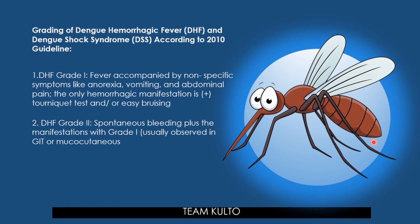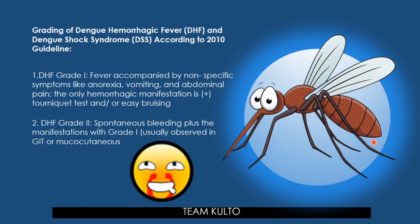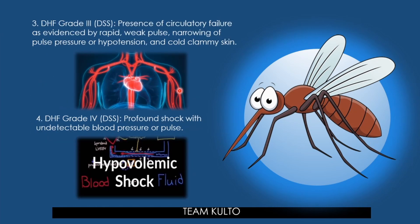Grade 2: spontaneous bleeding plus Grade 1 manifestations — usually observed in the gastrointestinal tract or mucous membranes, including nosebleeds (epistaxis) and GI bleeding. Grade 3: presence of circulatory failure evidenced by rapid weak pulse, narrowing of pulse pressure or hypotension, and cold clammy skin — these signs indicate the patient has progressed to Grade 3 dengue.